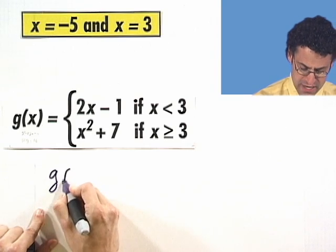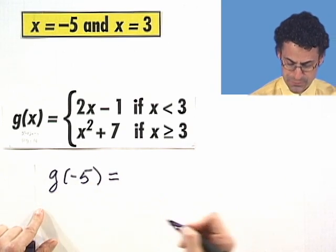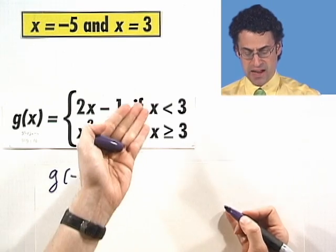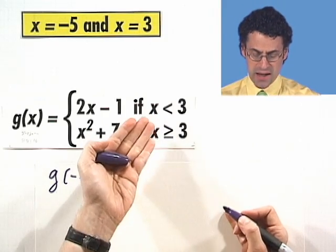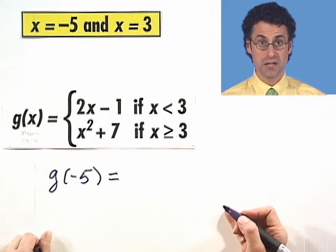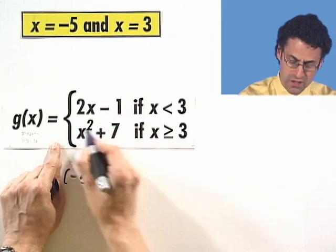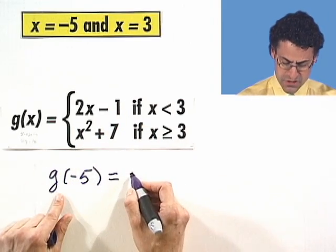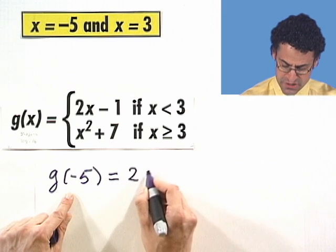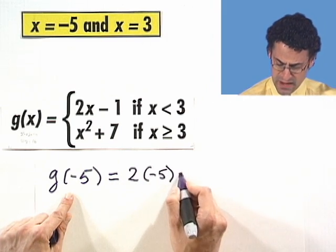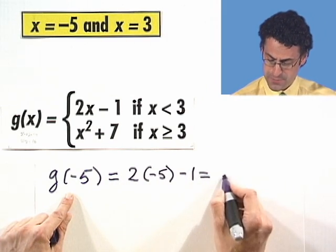if you want to find g of minus 5, what is minus 5? Am I in this situation or this? Well, is minus 5 less than 3? It sure is. So that means that this is the piece of the function I want to look at, which means that the value of the function g at that point is going to be 2 times negative 5 minus 1, which is negative 11.